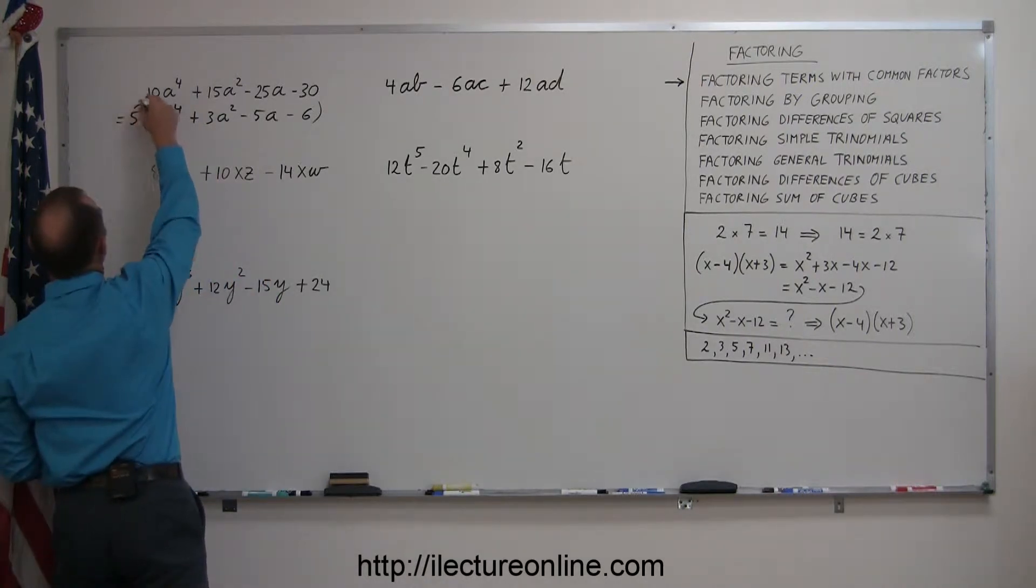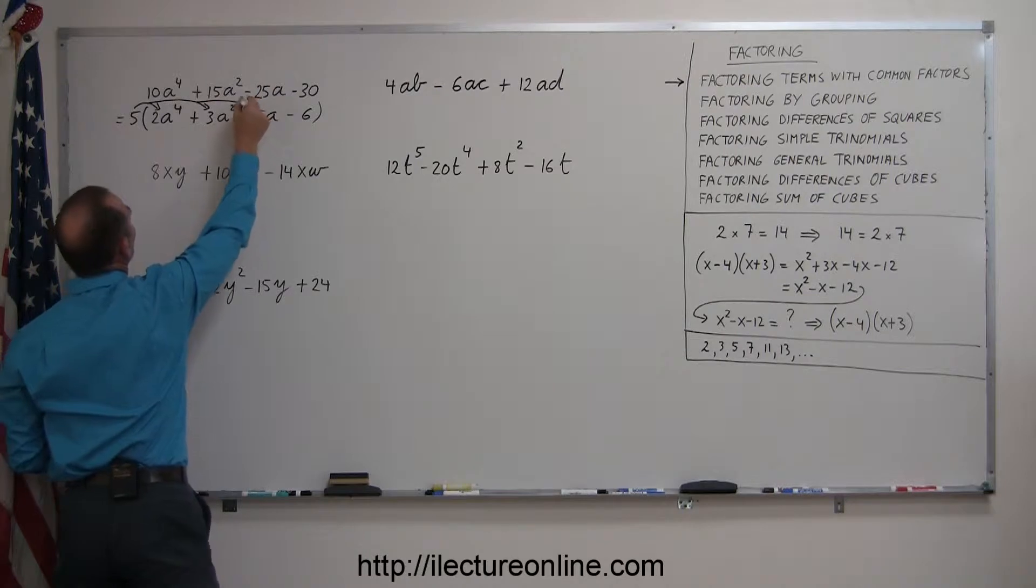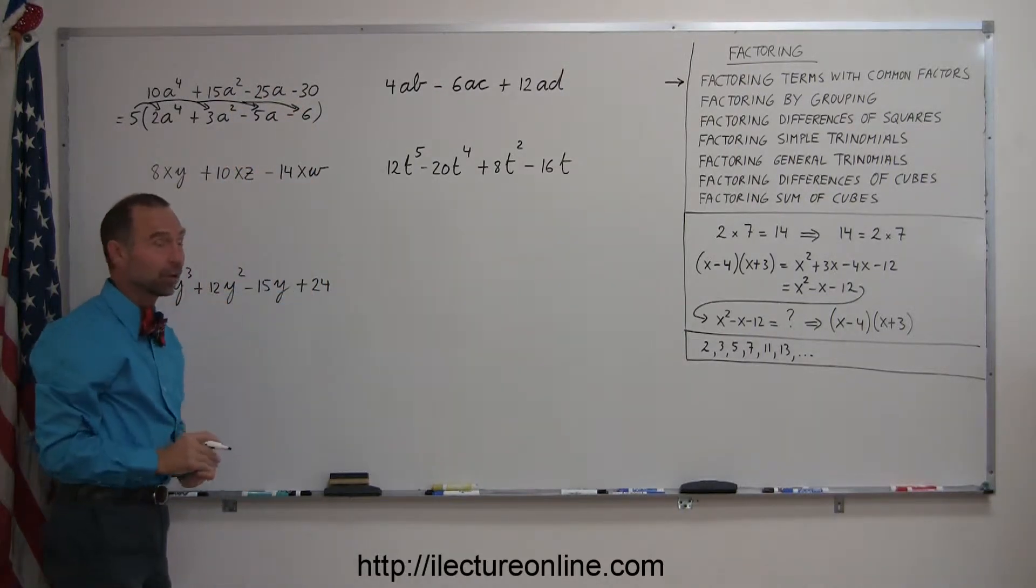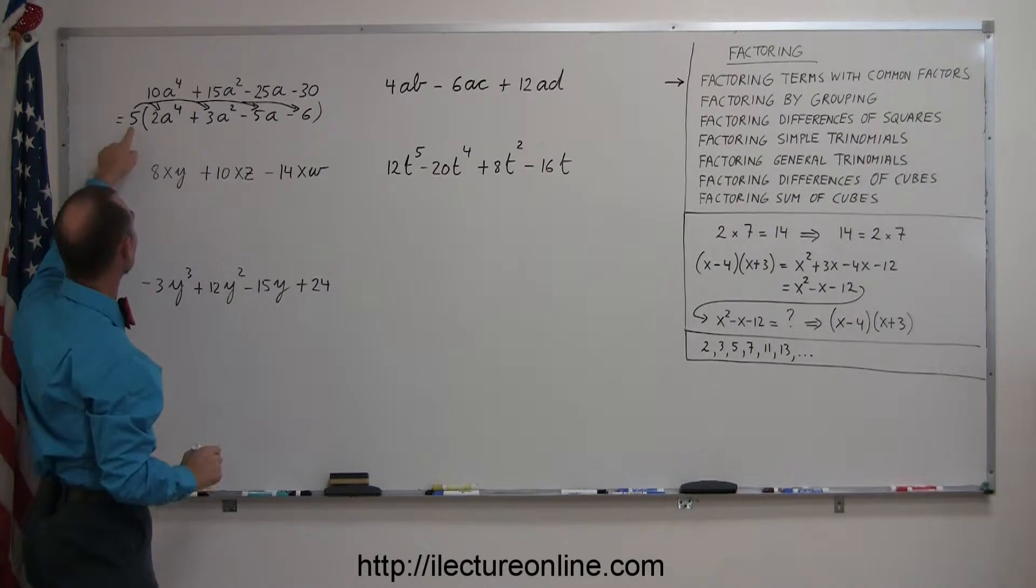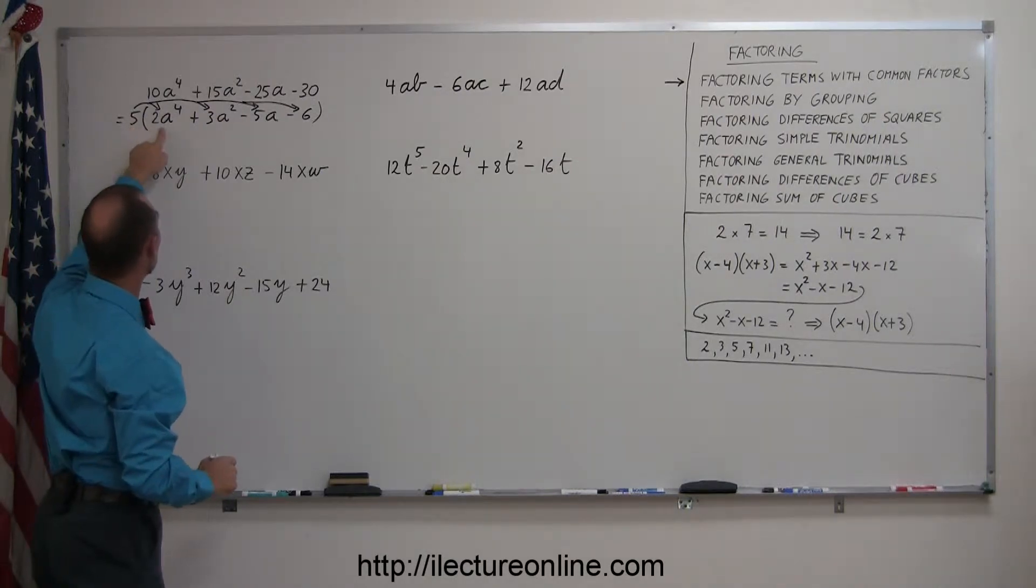So I'm going to multiply the 5 times this, the 5 times this, the 5 times this, and the 5 times this, to see if we end up with what we started with. If I multiply 5 times 2a to the fourth, I get 10a to the fourth.